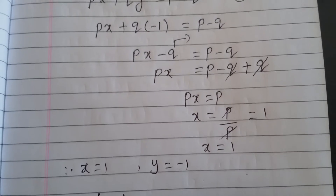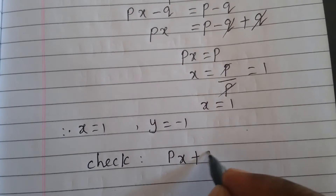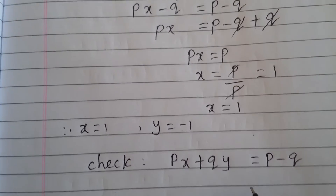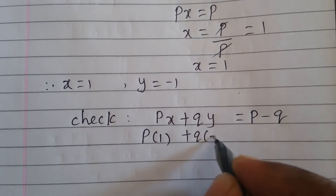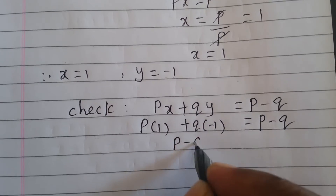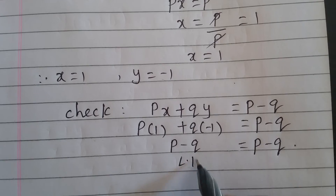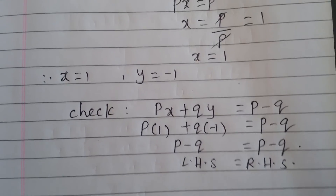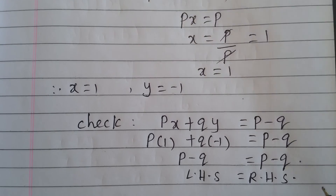For verification, substitute x equals 1 and y equals minus 1 into equation one: px plus qy equals p times 1 plus q times (minus 1) equals p minus q, which equals p minus q. So LHS equals RHS, and our answer is correct.